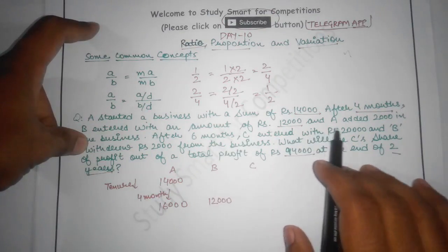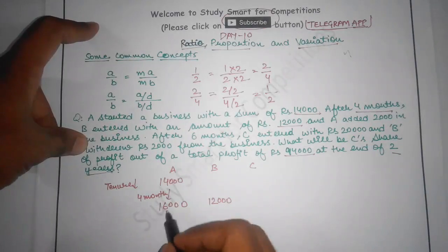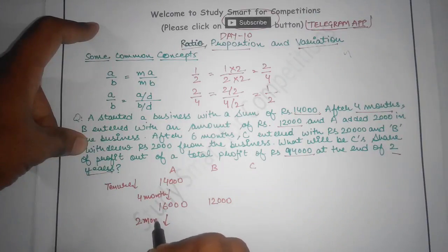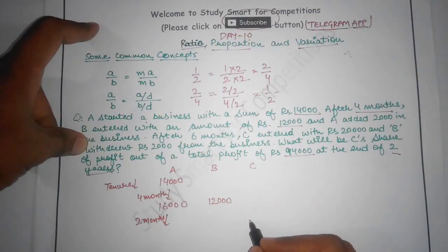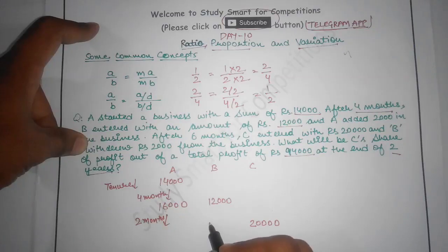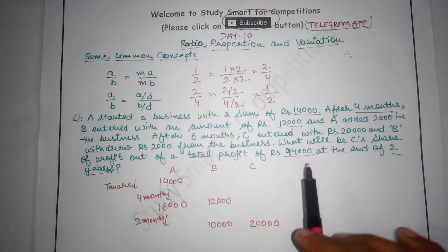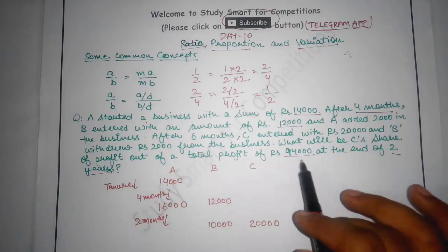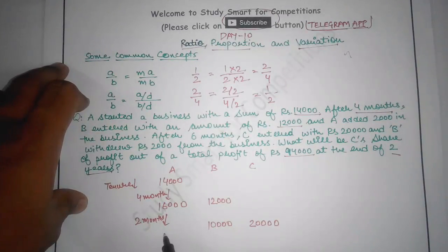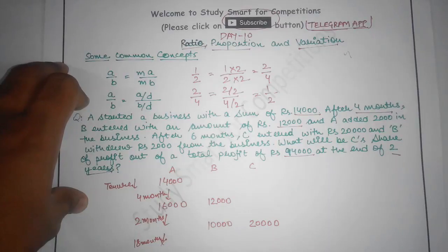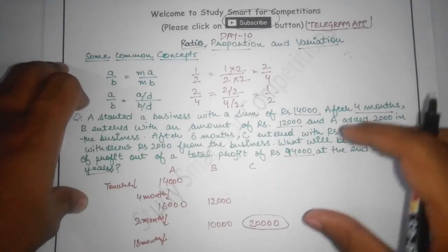After 6 months from start (4 plus 2), C entered with Rs. 20,000 and B withdrew Rs. 2,000, leaving B with Rs. 10,000. The question asks about C's share after 2 years (24 months total). Since 6 months have already passed, the remaining duration is 18 months. So C invested Rs. 20,000 for 18 months.